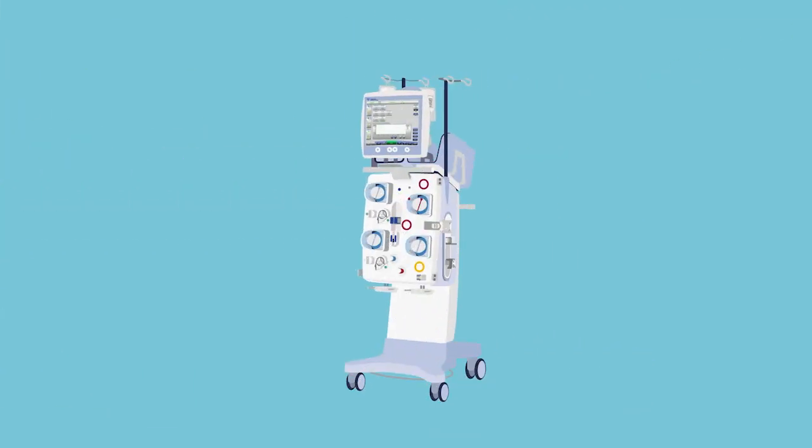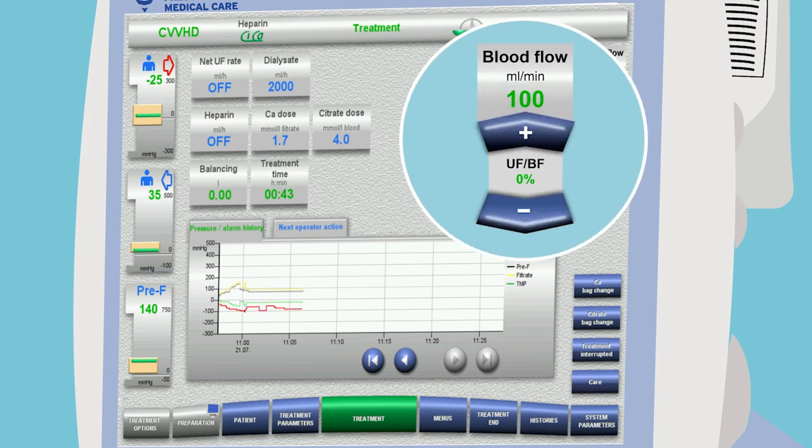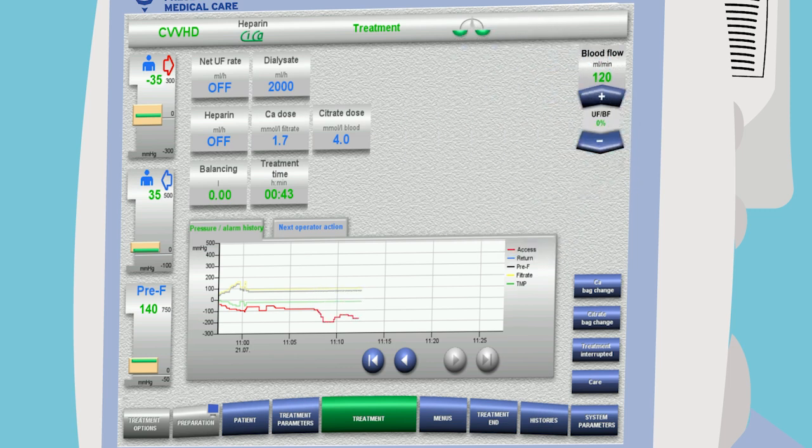In FMC acute dialysis machines, the citrate calcium anticoagulation is controlled via elaborate software. This also controls the coupling between the multiple pumps for matching flows of the different solutions. All processes can be monitored and individual adjustments can be made via the user interface.